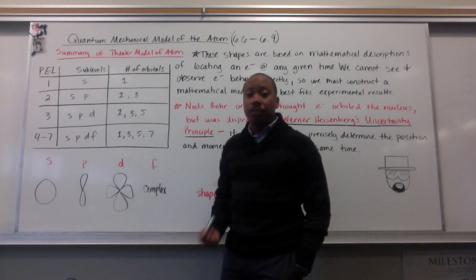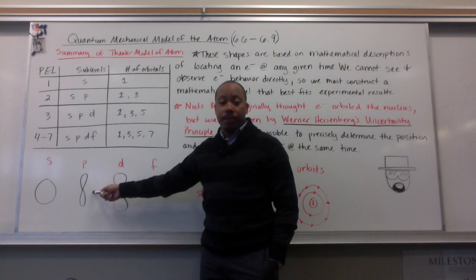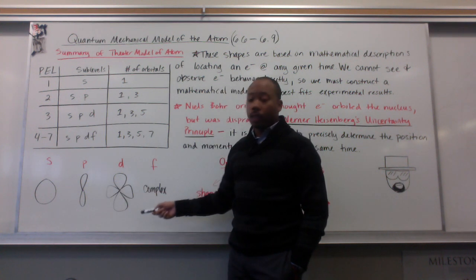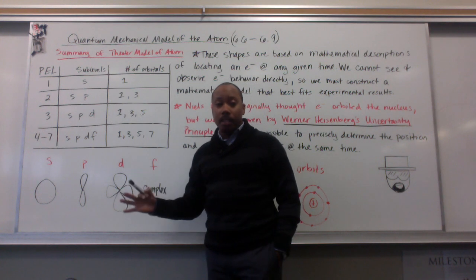Now, we said that these orbitals have shapes. S is shaped like a sphere, P like an infinity sign, D like a clover, and F is very complex. These shapes are based on experimental data.